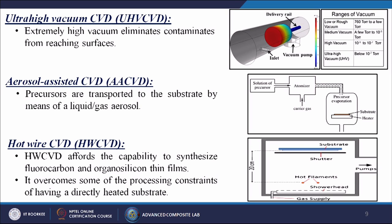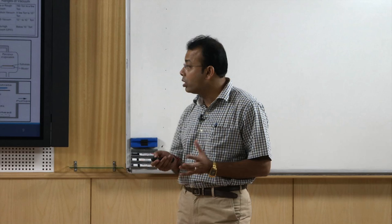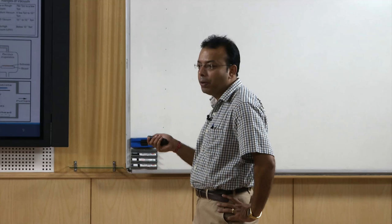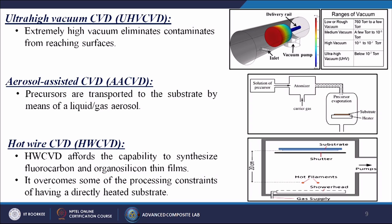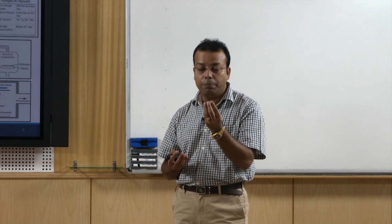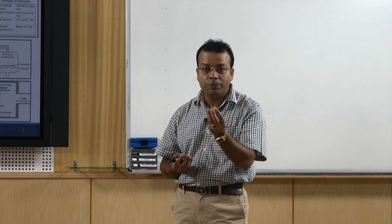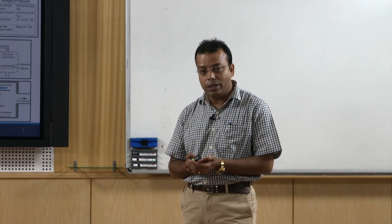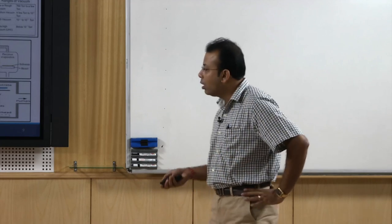Aerosol-assisted CVD (AACVD): precursors are transported to the substrate by means of liquid or gas aerosols rather than carrier gases. Solutions of precursors are used, then an atomizer converts them — applying high-pressure gas to the liquid to form small bubbles — and those bubbles come into contact with the substrate and deposit. A heating arrangement enables chemical reactions if heat is required, forming a coating on top of the surface.